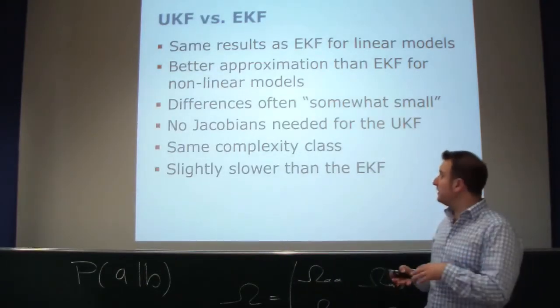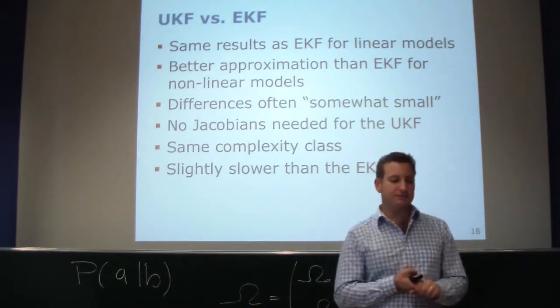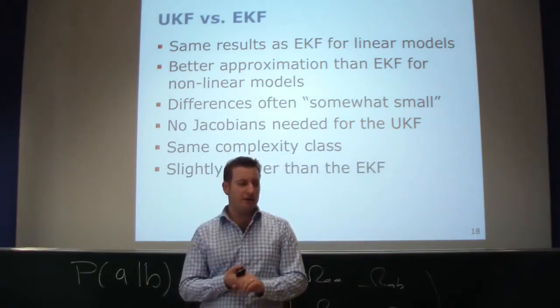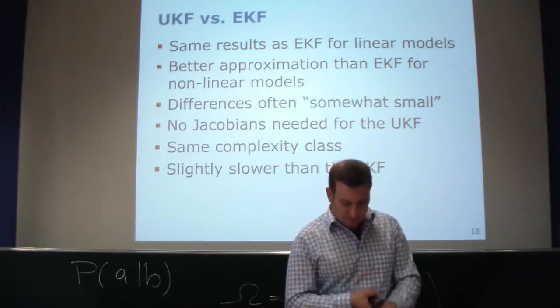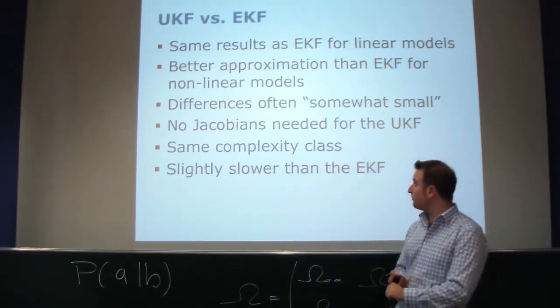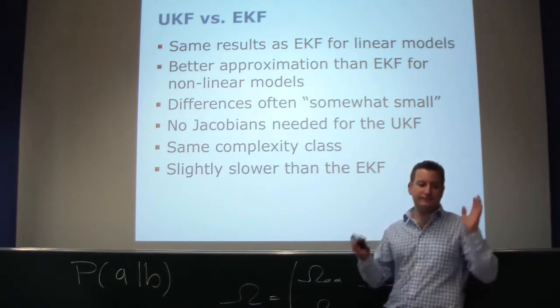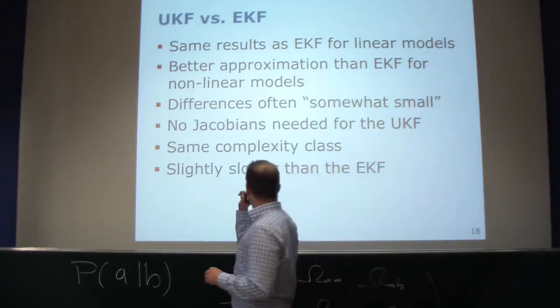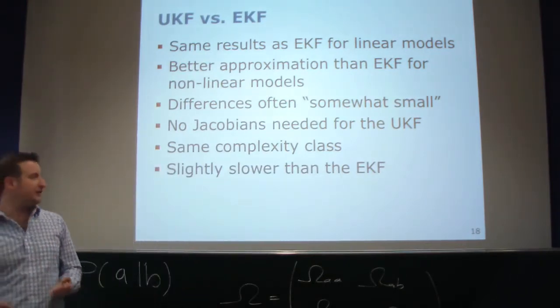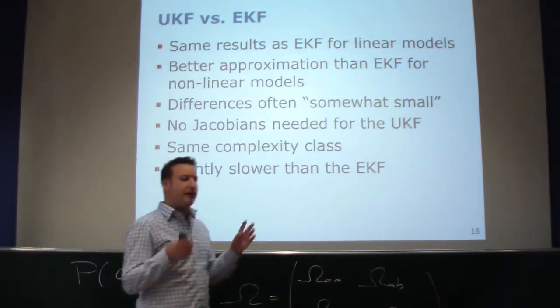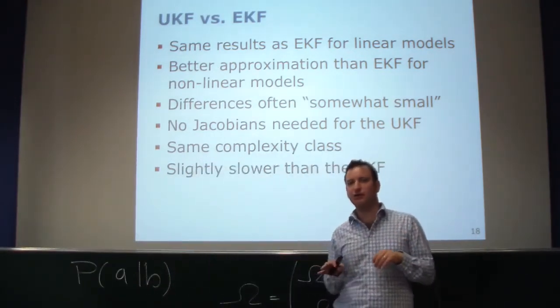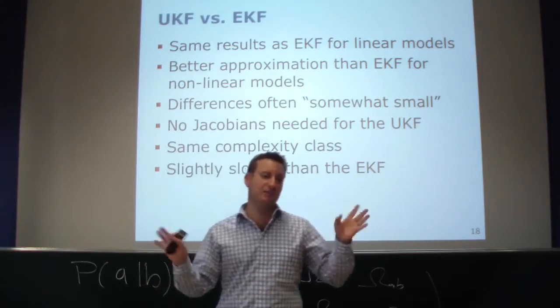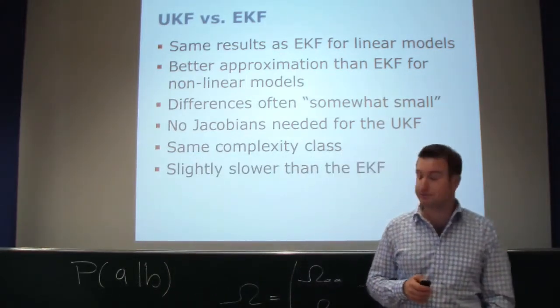If you compare the UKF to the EKF, they give the same result in linear models. The UKF is typically a better approximation and works better with nonlinear models compared to the EKF. Often it's reported that the difference is often somewhat small, so often it doesn't make a really big difference. An advantage of the UKF is that no Jacobians are needed. It's the same complexity class, so in terms of the complexity itself, nothing changes, although the UKF is slightly slower. You need to make sure sometimes you don't end up with numerical issues when using these unscented transforms, especially if you have some dimensions which are close to infinity in terms of uncertainty.